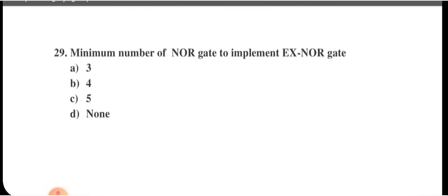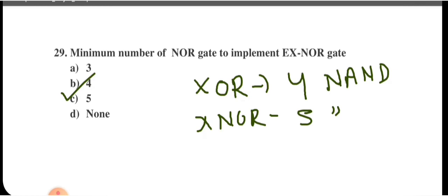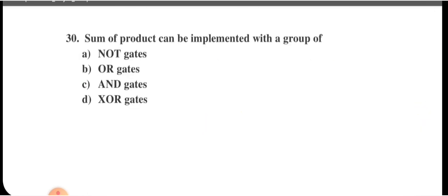Minimum number of NOR gates to implement EXOR: 5 NOR gates (versus 4 NAND gates for EXOR using NAND). For XNOR using NAND, 5 NAND gates are needed. For EXOR using NOR, 5 NOR gates are needed. Option B is correct.